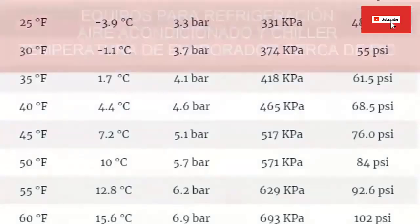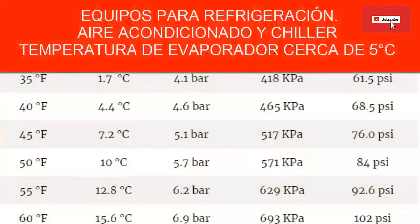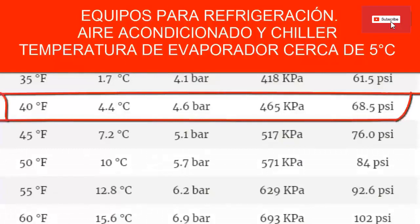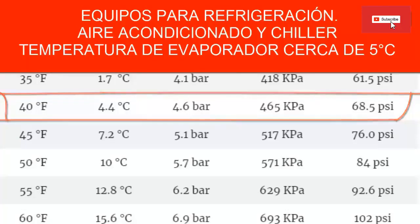For a high temperature system — refrigeration without freezing or air conditioning equipment — with a temperature of 4.4 degrees Celsius (approximately 40 degrees Fahrenheit), the low manometer should mark approximately 68.5 psi, equivalent to 4.6 bars.